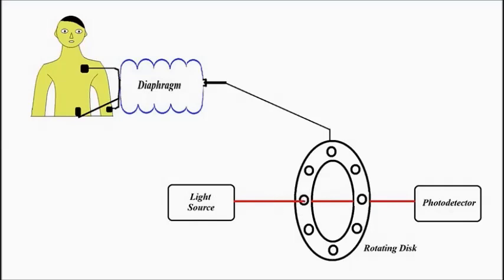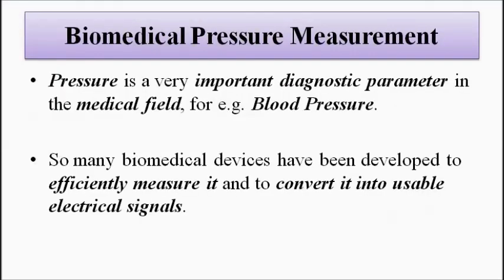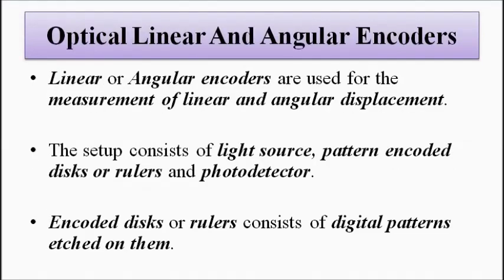Causing the photodetector to produce the required final output. So this is the basic principle of measurement of pressure, biomedical pressure measurement, using optical and linear and angular encoders.